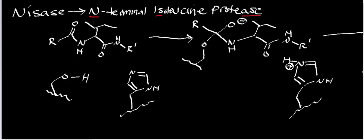Using our strategy, we find the alpha carbon in question — here is the isoleucine residue and here is its alpha carbon. Since NiceAce targets the N-terminal peptide bond, this bond right here that I'm highlighting is the bond that's going to get hydrolyzed and cleaved.